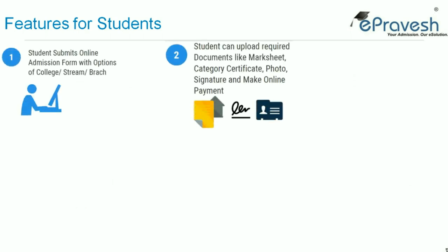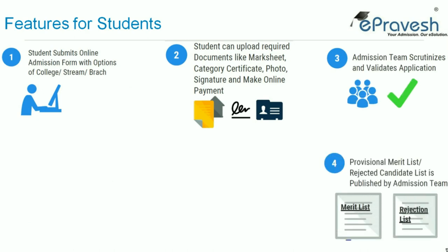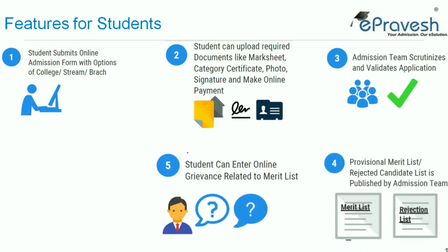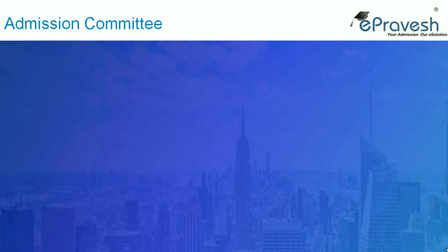Here is the simple workflow of the central admission process. Students fill the form, it is verified by the admission team, and a provisional merit list is defined. Students can report grievances if any, and the final merit list is published based on grievance resolution.